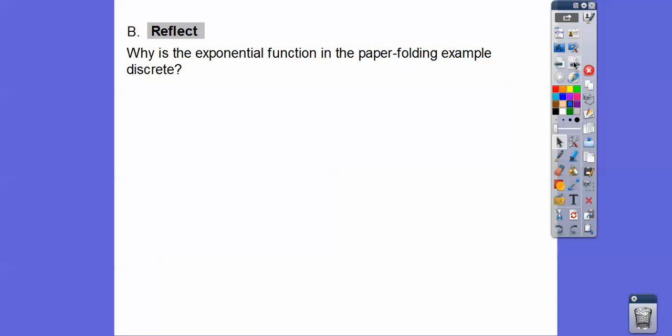So now, why is the exponential function in the paper folding example discrete? Well, remember, discrete means they're only points. They're not a continuous set of points. In the next lesson, we'll be doing continuous points. So it's discrete because we can't fold, you know, half a number of times. The folding are whole numbers of times. So whenever your input values are whole numbers, then it's always going to be discrete. They're always going to be separate points on the graph right there.